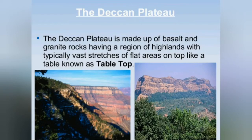The Deccan Plateau is a triangular landmass lying to the southwest of the river Narmada. The broad base of the Satpura Range forms its north, while the Mahadev Hills, the Kaimur Hills and the Maikala Range form its eastern extensions. The Deccan Plateau is higher in the west and slopes gently eastwards. An extension of the plateau is also visible in the northeast, generally known as the Meghalaya, Karbi Anglong Plateau and the North Cachar Hills. It is separated from the Chotanagpur Plateau by a fault. Three prominent hill ranges from west to east are the Garo, the Khasi and the Jaintia Hills.